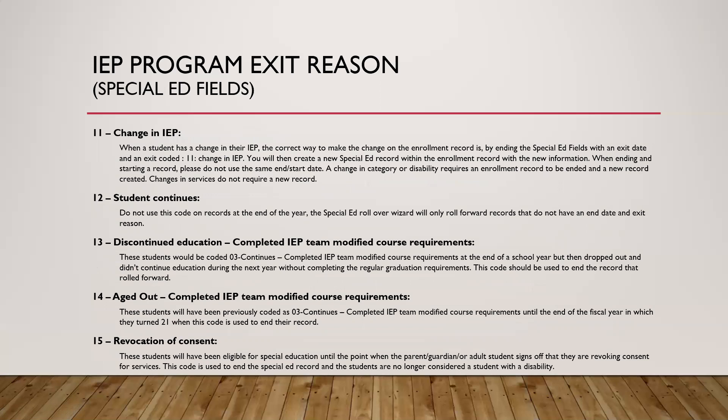Code 11 is change in IEP — you've had an IEP meeting with a change in disability category or LRE, so the ending code is 11 and you create a new special ed record. Code 12 is student continues — do not use this code on records at the end of the year, because the special ed rollover wizard only rolls forward records that do not have an end date and exit reason. If the student is coming back next year, do not use this code. Code 13 is discontinued education — the student completed IEP team modified course requirements but decided not to return to school.